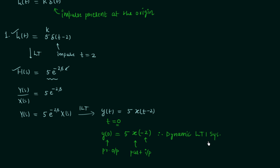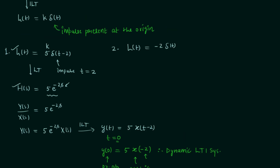This is the complete process, but you don't have to follow it every time — just check either the impulse response or the transfer function. In the second problem, the impulse response is h(t) = −2·δ(t). Comparing with the condition, k = −2 and δ(t) is the same, meaning the impulse is present at the origin. Therefore the system is a static LTI system.